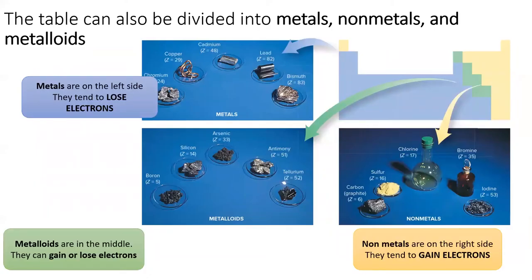Another way to divide the table up is into metals, nonmetals, and metalloids. Metals live on the left side of the table.